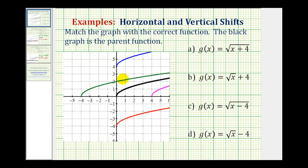On this problem, we want to match the graph on the left with the correct function on the right. We're told the black graph is the parent function. We can probably tell from the given functions on the right that our parent function is f(x) = √x.